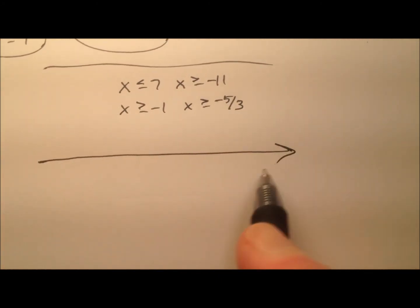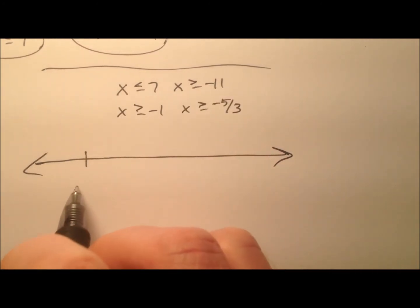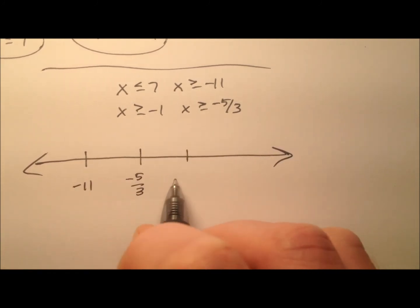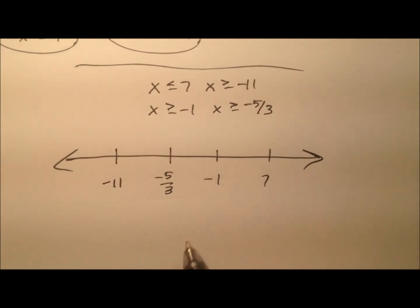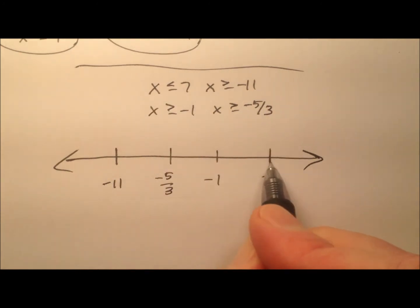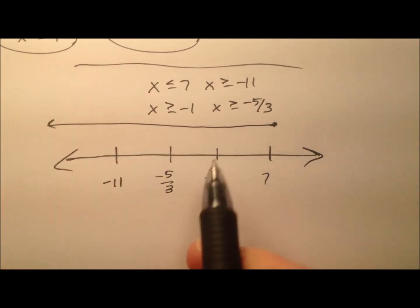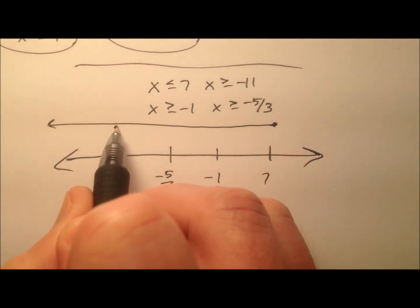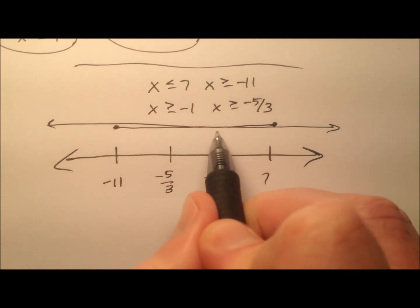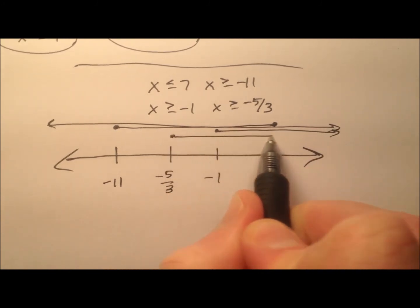Let's go ahead and look at a graph. I need to plot all of these. Negative 11 is the smallest, negative five thirds is the next smallest, then negative one, then seven. So less than or equal to seven goes all the way to the left from seven. Greater than or equal to negative 11 goes all the way to the right from negative 11. Negative one is here and goes to the right. Negative five thirds is here and goes to the right as well.